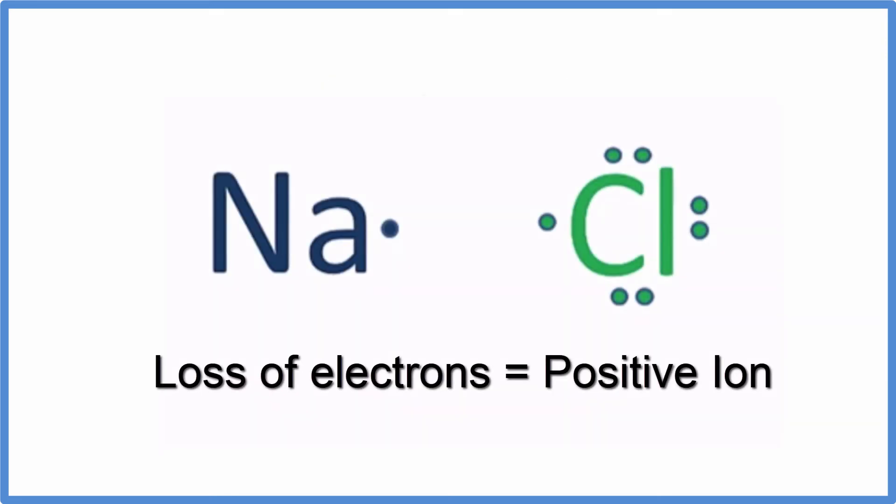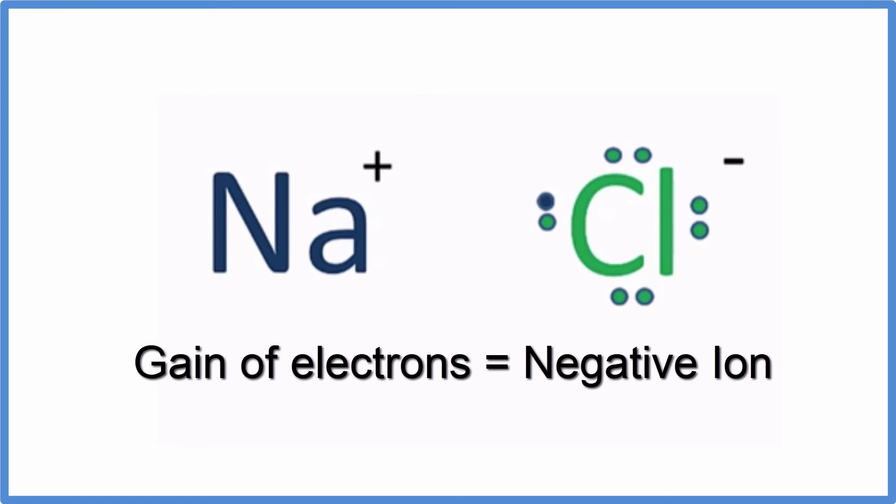It's important to understand that when an atom loses an electron, negative charge, it becomes positive. The atom that receives that electron gets the negative charge. It becomes a negative ion.